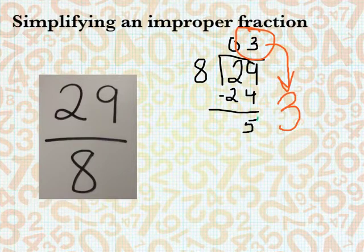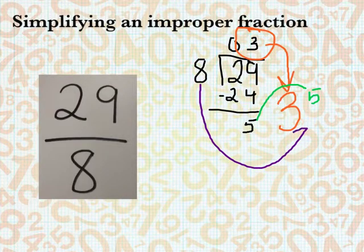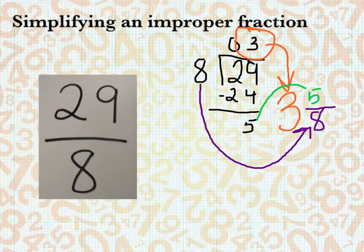Our remainder is going to go to the top of this fraction, so that's going to be 5. And then our divisor is actually going to go down here to the bottom. So we have 3 and 5 eighths.